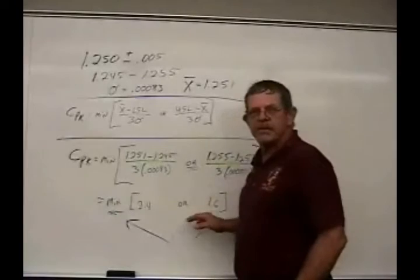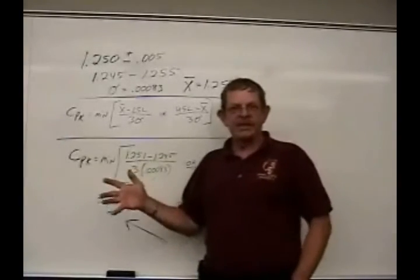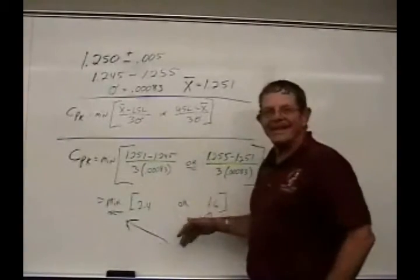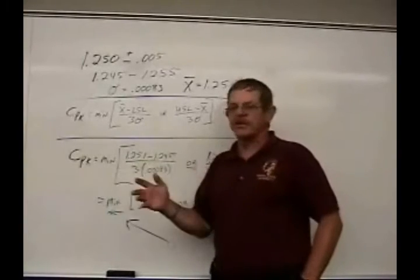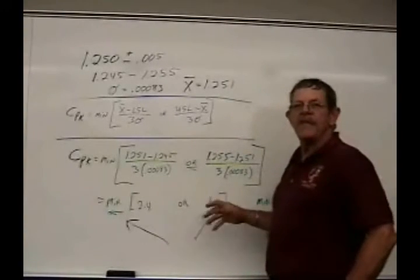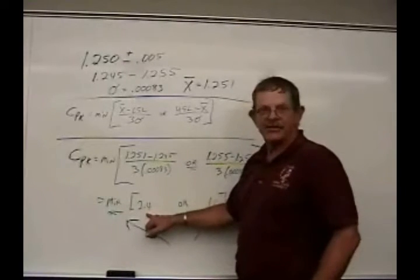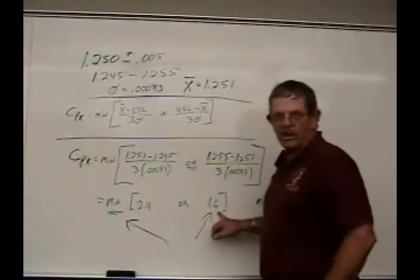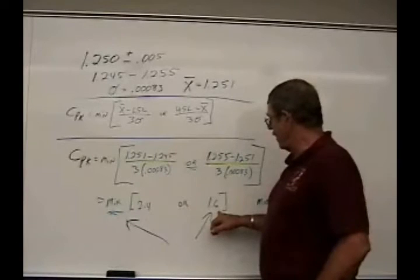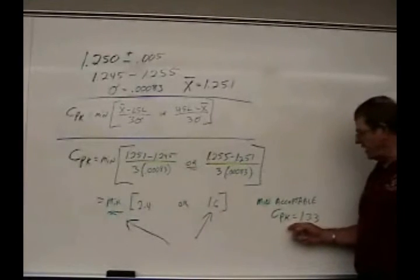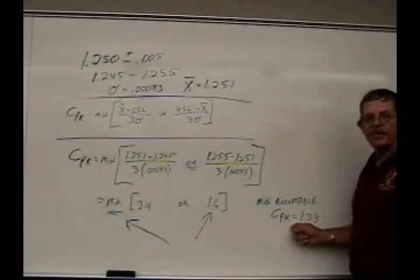So you have to choose the minimum, the lower. The reason is, this is the least capable of the parts that were measured, and that's what you want to go by. It would be nice to choose the most, but what if you had 2.4 here but only 1.1 here? That wouldn't be good. And remember, the minimum acceptable CPK is 1.33.